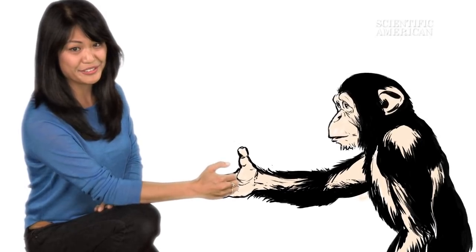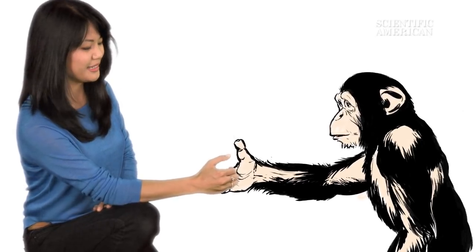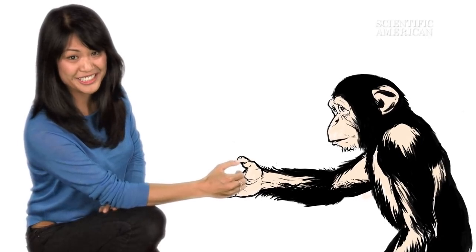Unlike chimps, our neurons control smaller bundles, so we have more specific muscle control. So keep this in mind the next time you think of challenging a chimp in a pub. You might want to try thumb wrestling instead.